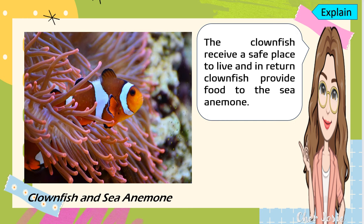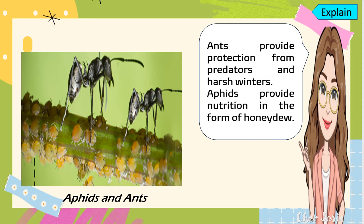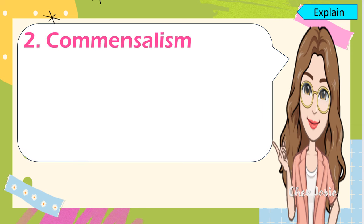Another example of mutualism is the clownfish and sea anemone. The clownfish receives a safe place to live, and in return, the clownfish provides food to the sea anemone. Another example is aphids and ants — the ants provide protection from predators and harsh winters, while aphids provide nutrition in the form of honeydew.